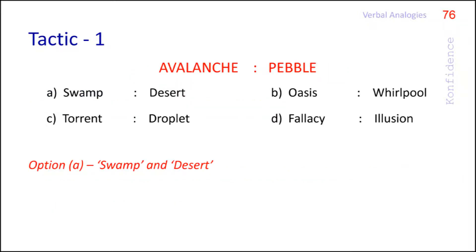Option A is swamp and desert. Swamp is marshy land. It's soft and wet. So definitely it's not made up of desert.